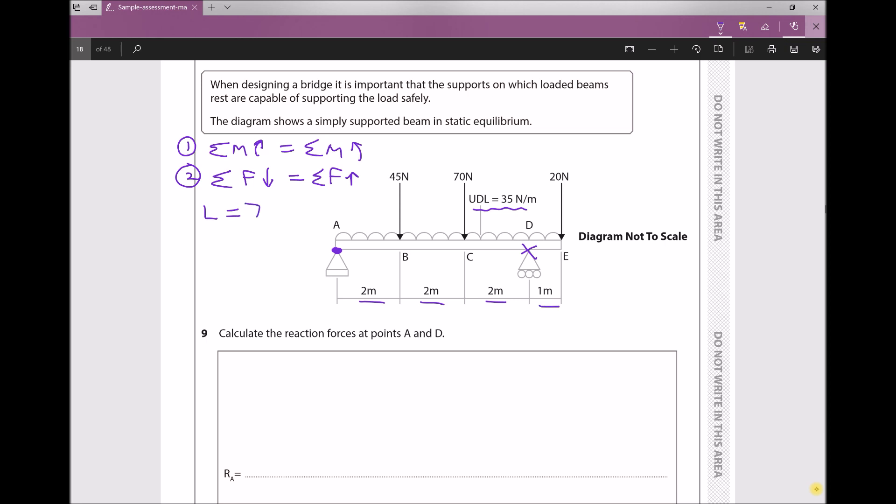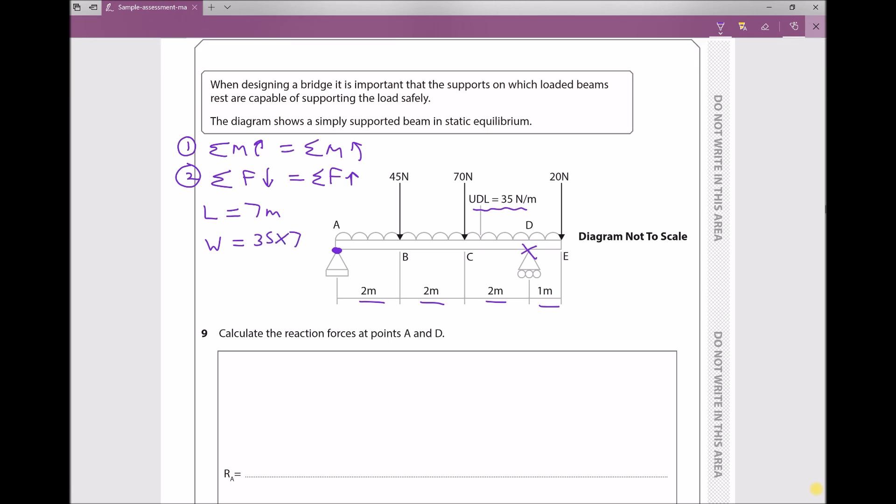So we have a beam that's 7 meters long therefore the weight is going to be 35 times 7, and the reason for that is because each meter of this beam weighs 35 newtons but we've got 7 meters, therefore the weight 35 times 7 equals 245 newtons.